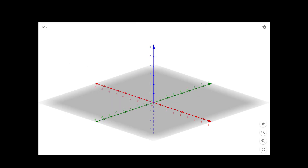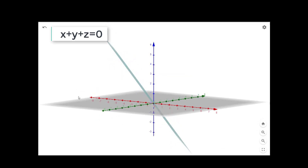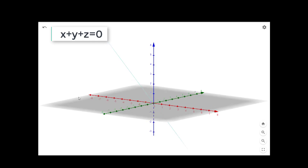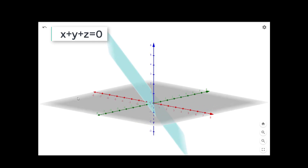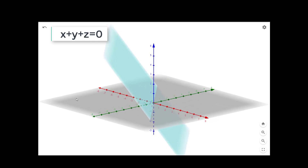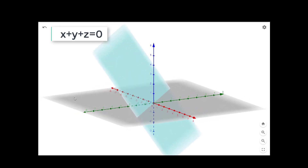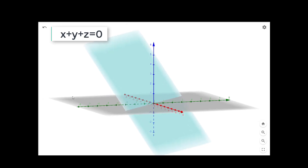The plane x plus y plus z equal to 0 will look like this. It will definitely pass through the origin because (0, 0, 0) satisfies this equation of the plane. So our plane will look like this.